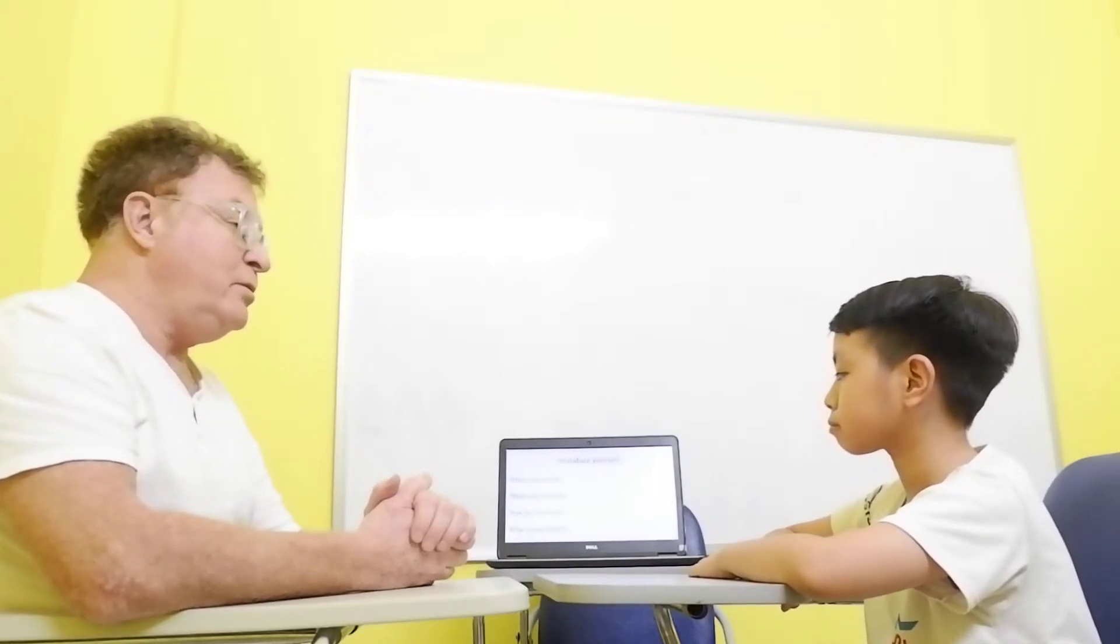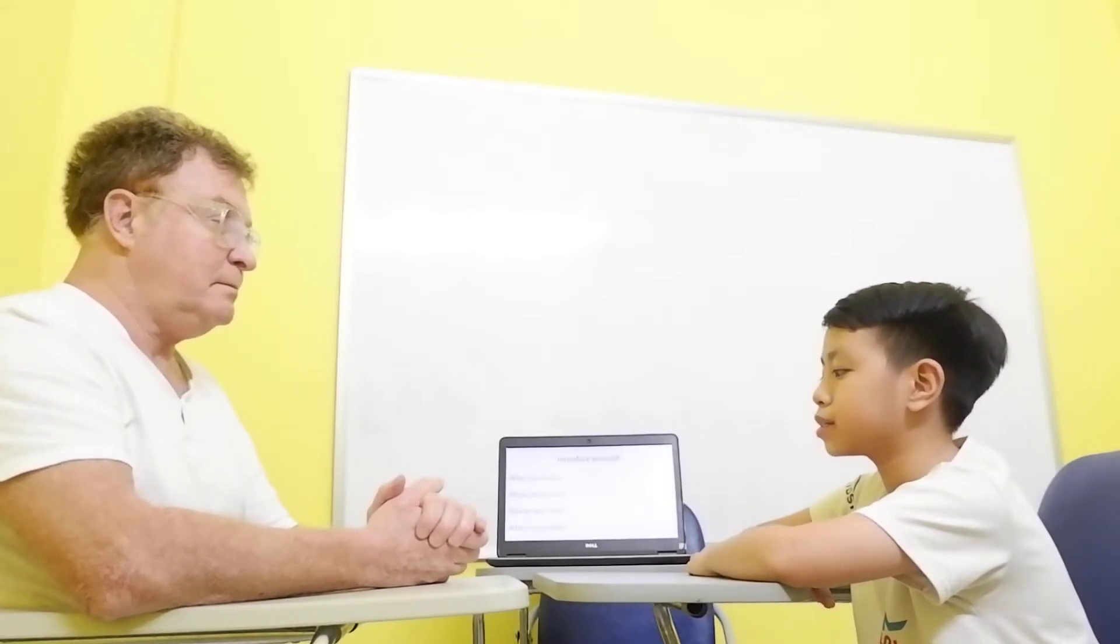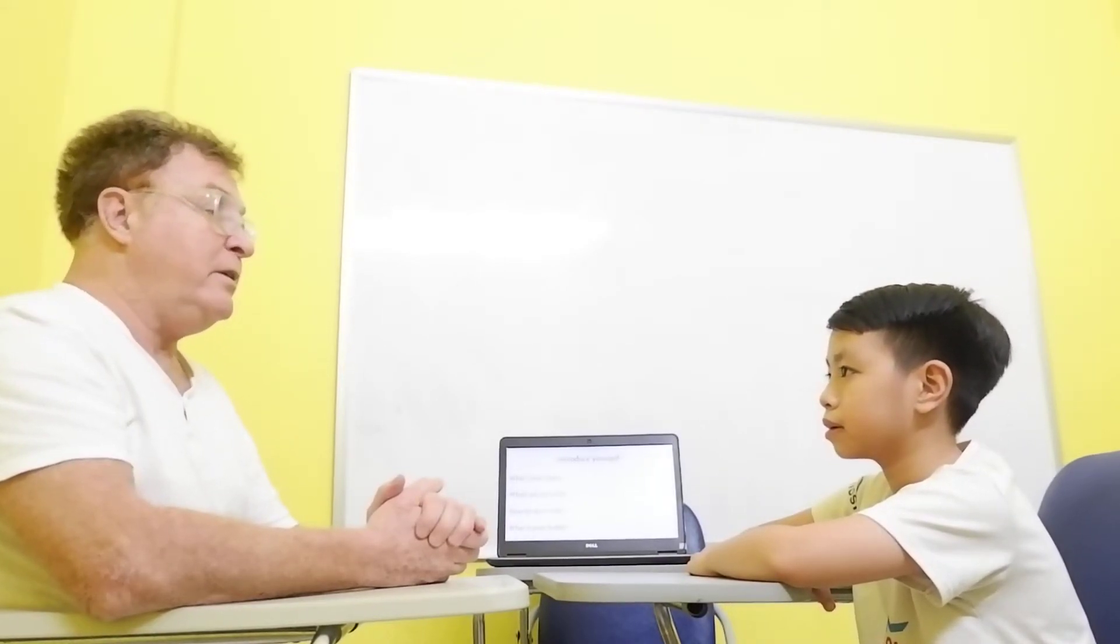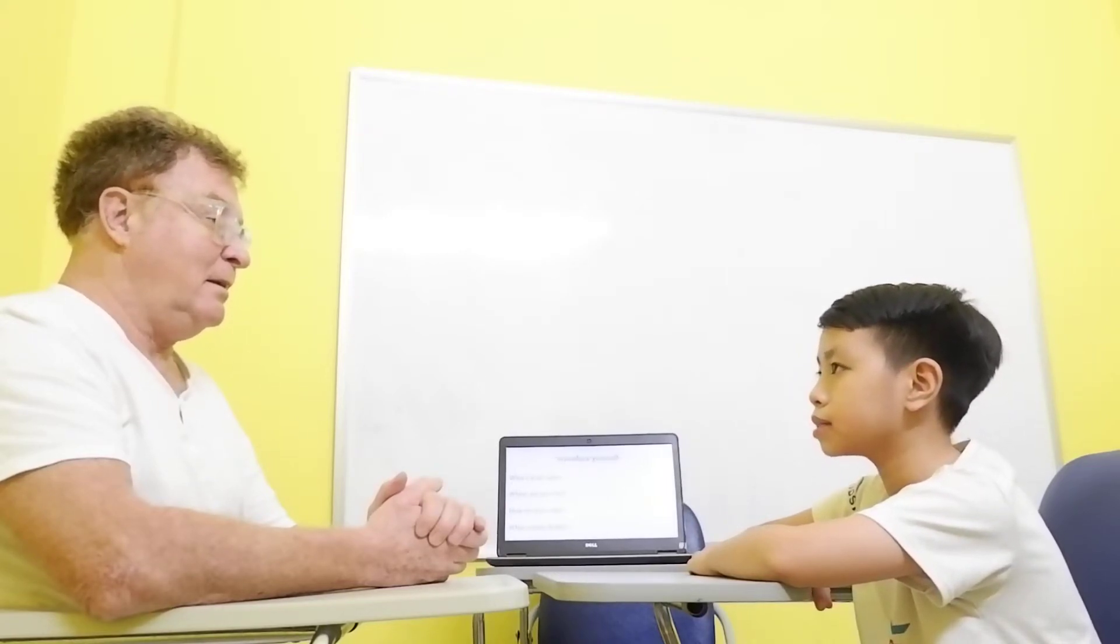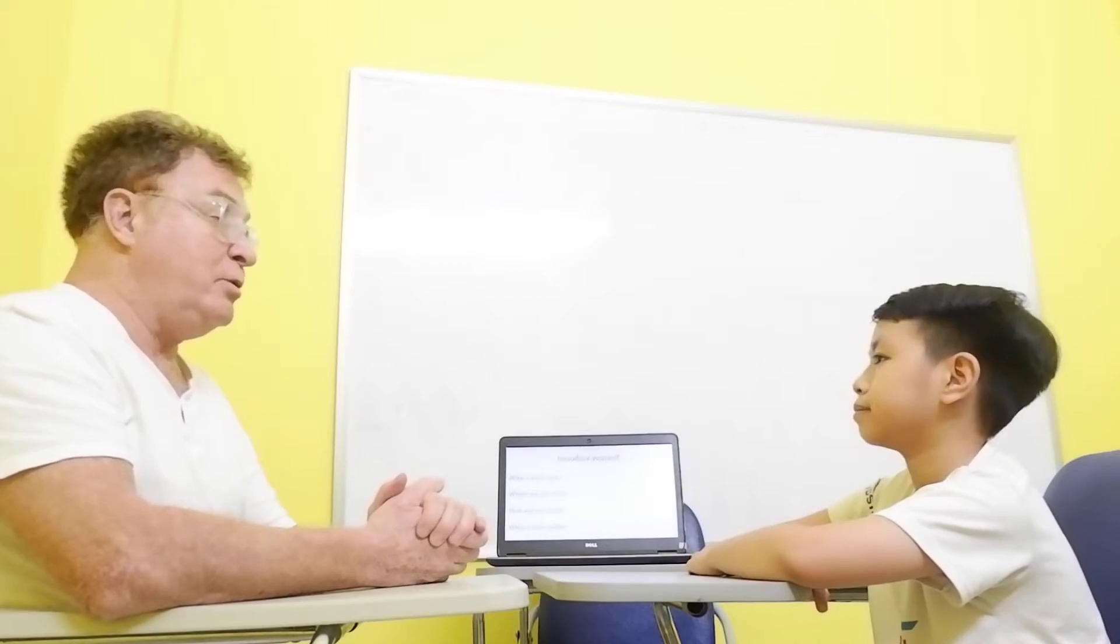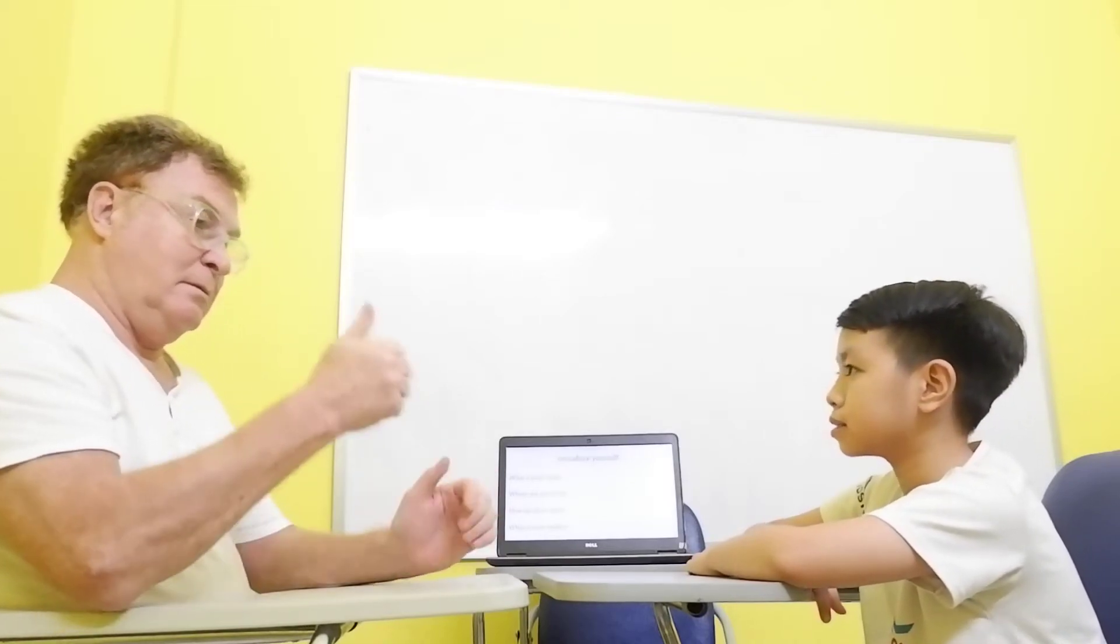How are you today? I'm good. Thank you. Very good. What is your hobby? My hobby is swimming. Swimming. Where do you go swimming? I'm swimming in a swimming pool. Oh, a swimming pool near your house? No. Oh, okay. Far away? Yes. Okay. Very good. Are you a good swimmer? Yes. Nice.